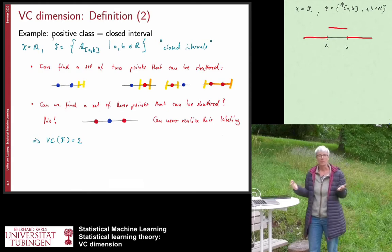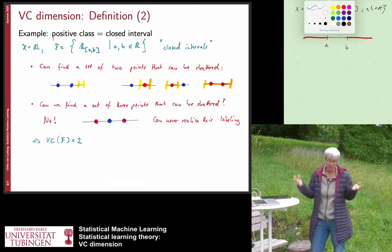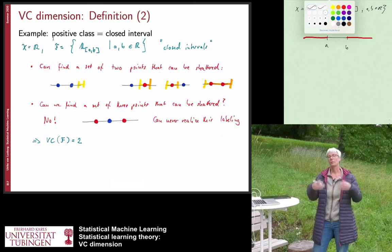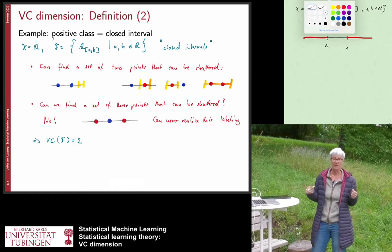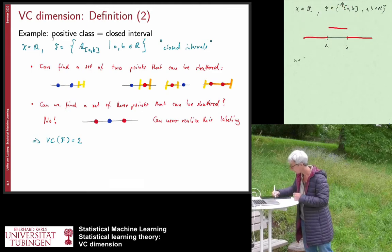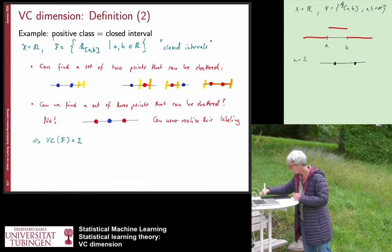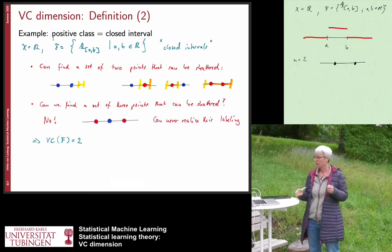The question is: what is the VC dimension? To find it, you start with small sets of points and try to see whether you can find a dataset that can be shattered. We start with n=2: we have a real line with two points, and we ask whether we can realize all possible labelings on this dataset.